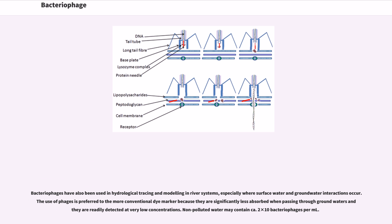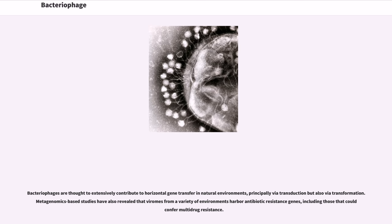Metagenomics has allowed the in-water detection of bacteriophages that was not possible previously. Bacteriophages have also been used in hydrological tracing and modeling in river systems, especially where surface water and groundwater interactions occur. Their use is preferred to conventional dye markers because they are significantly less absorbed when passing through groundwaters and are readily detected at very low concentrations. Non-polluted water may contain approximately 2×10^8 bacteriophages per milliliter. Bacteriophages are thought to extensively contribute to horizontal gene transfer in natural environments, principally via transduction but also via transformation. Metagenomics-based studies have also revealed that phage genomes from a variety of environments harbor antibiotic resistance genes, including those that could confer multi-drug resistance.